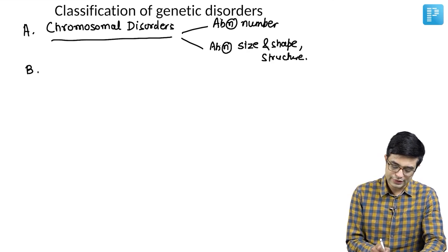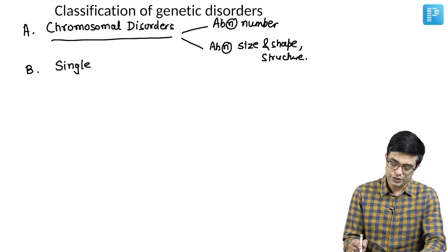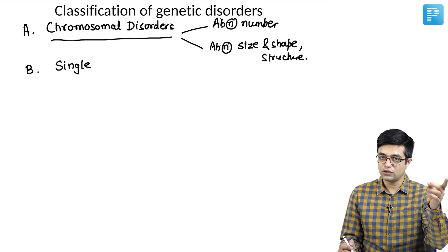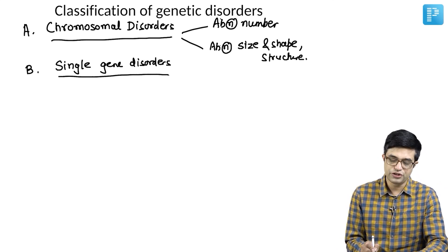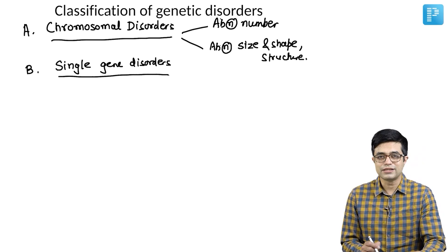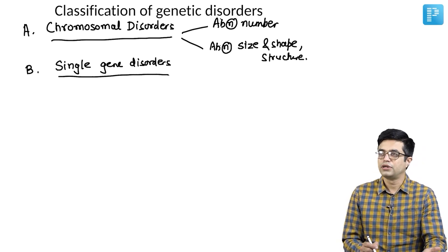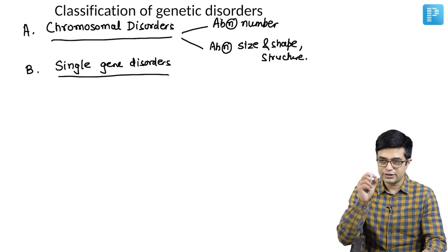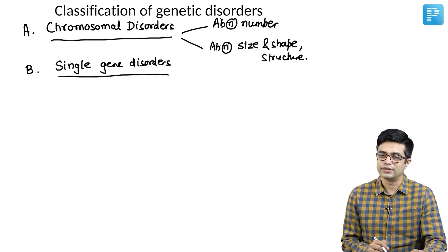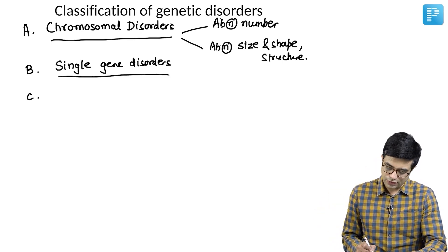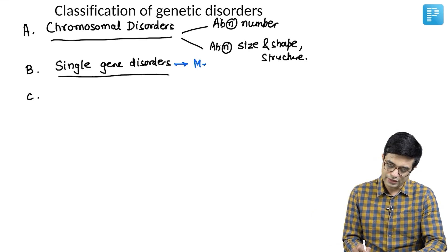Second category are the single gene disorders. Down syndrome is aneuploidy that comes in chromosomal disorder. Single gene disorders usually arise due to single gene mutations, for example cystic fibrosis, for example sickle cell anemia where there is a single point mutation or some mutation creating the disease. Single gene disorders are also called as they show Mendelian inheritance.